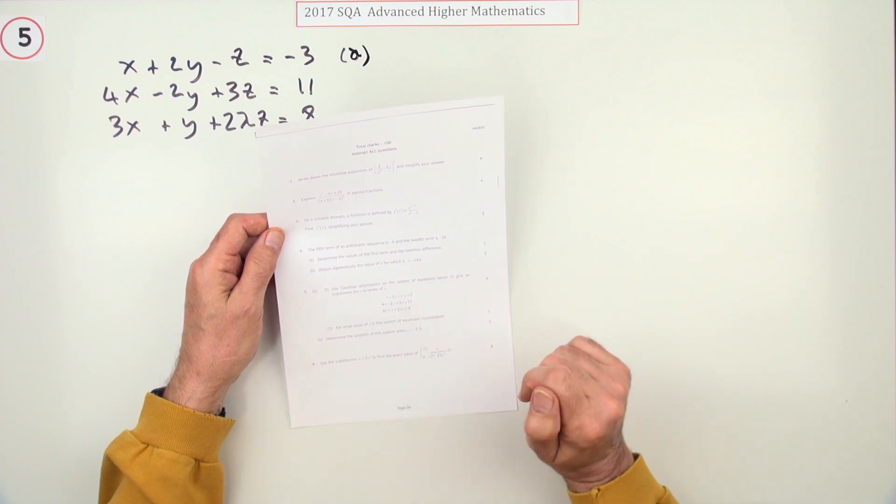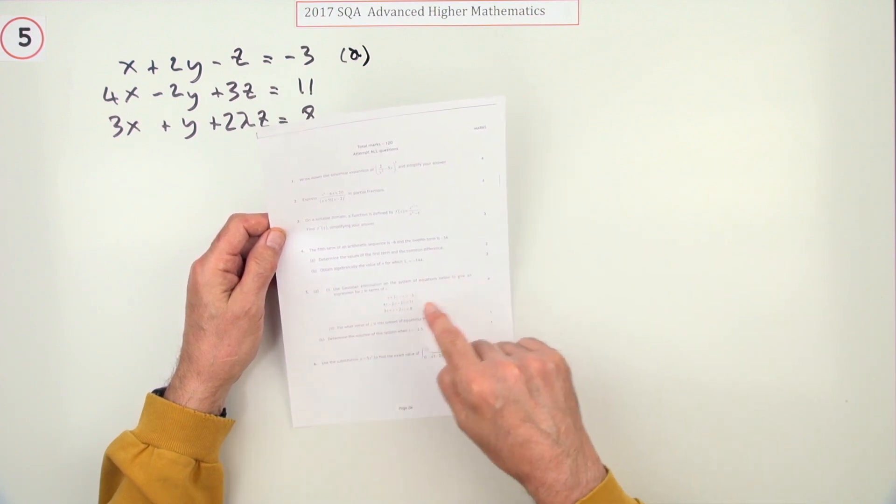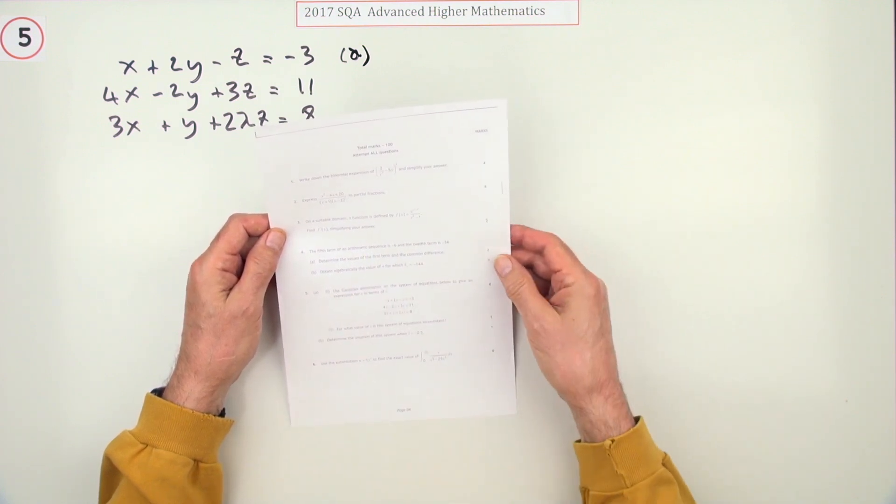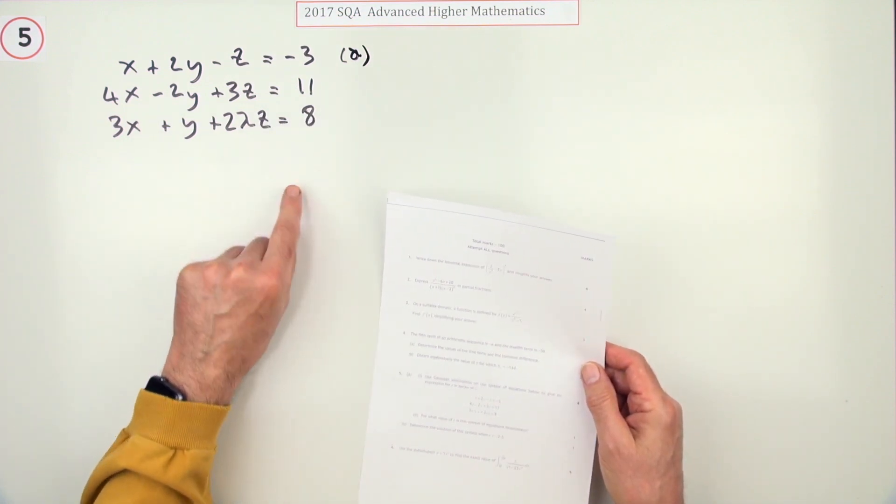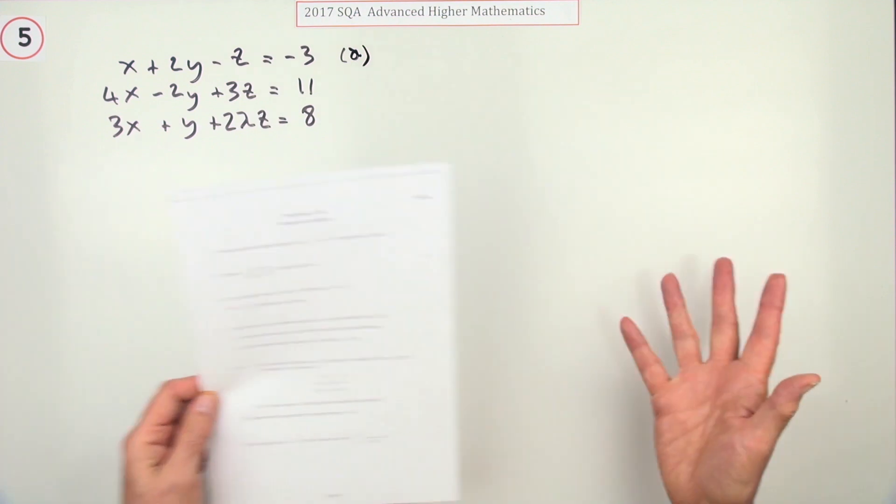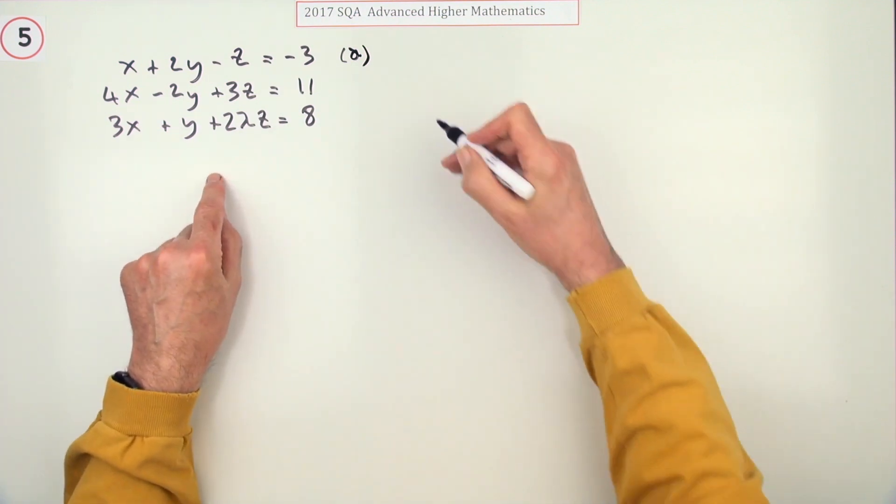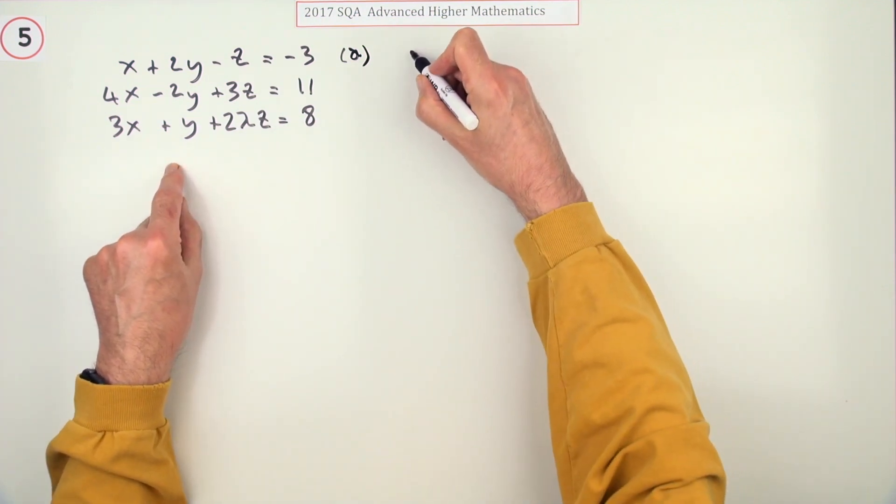Part A for four marks, six marks altogether. Part A for four marks. Use Gaussian elimination on the system of equations to give an expression for z in terms of lambda. So just create your augmented matrix first of all.